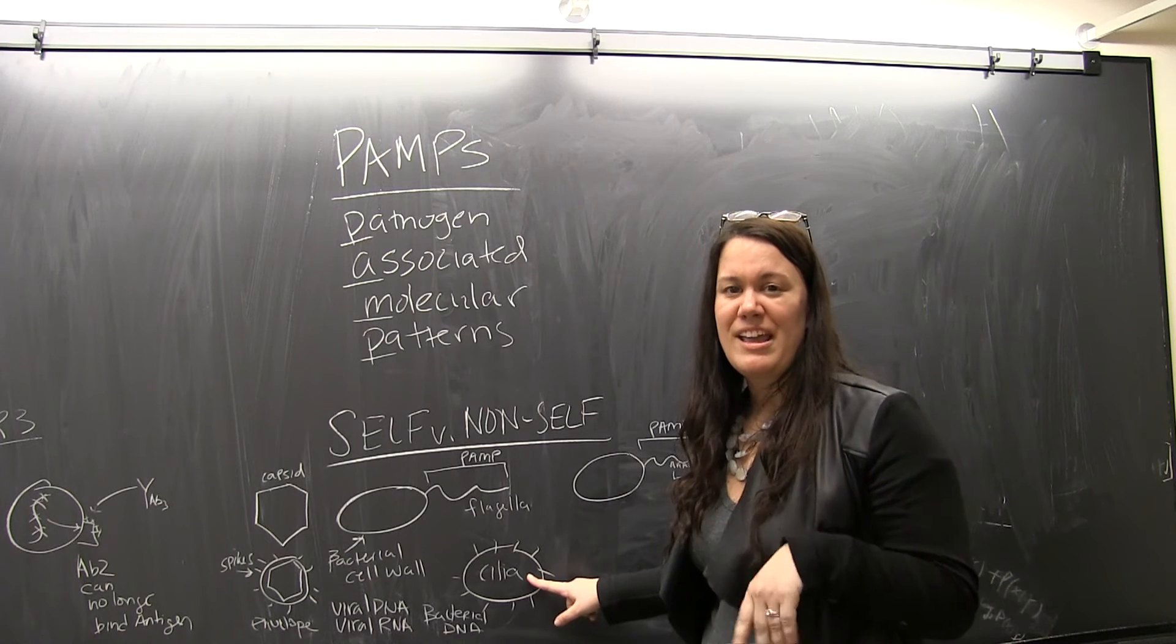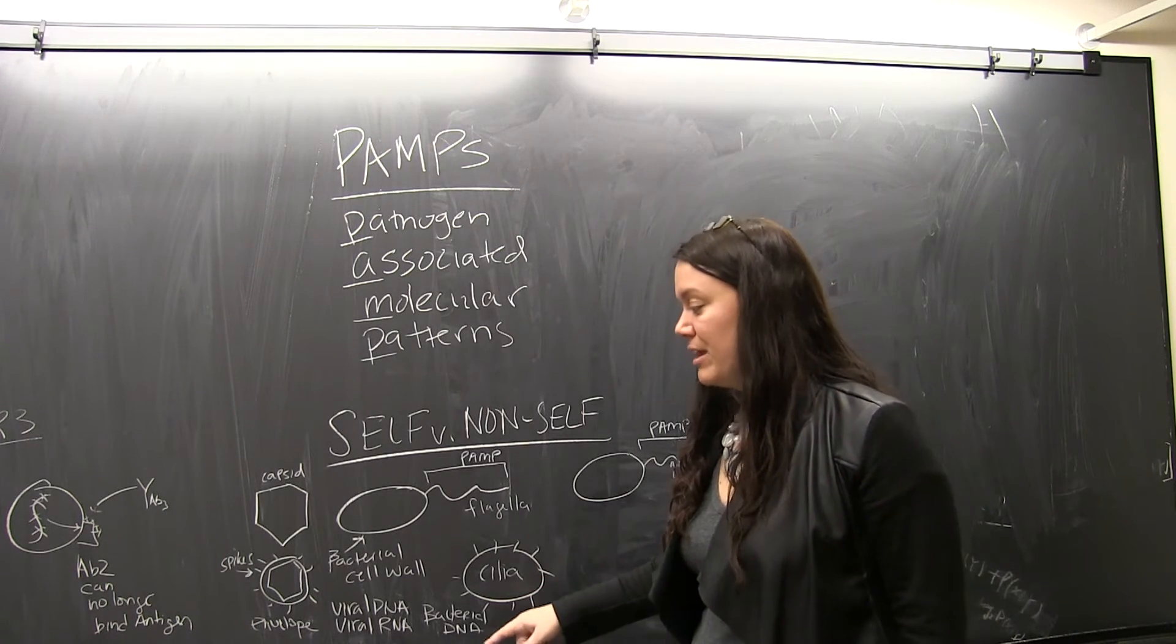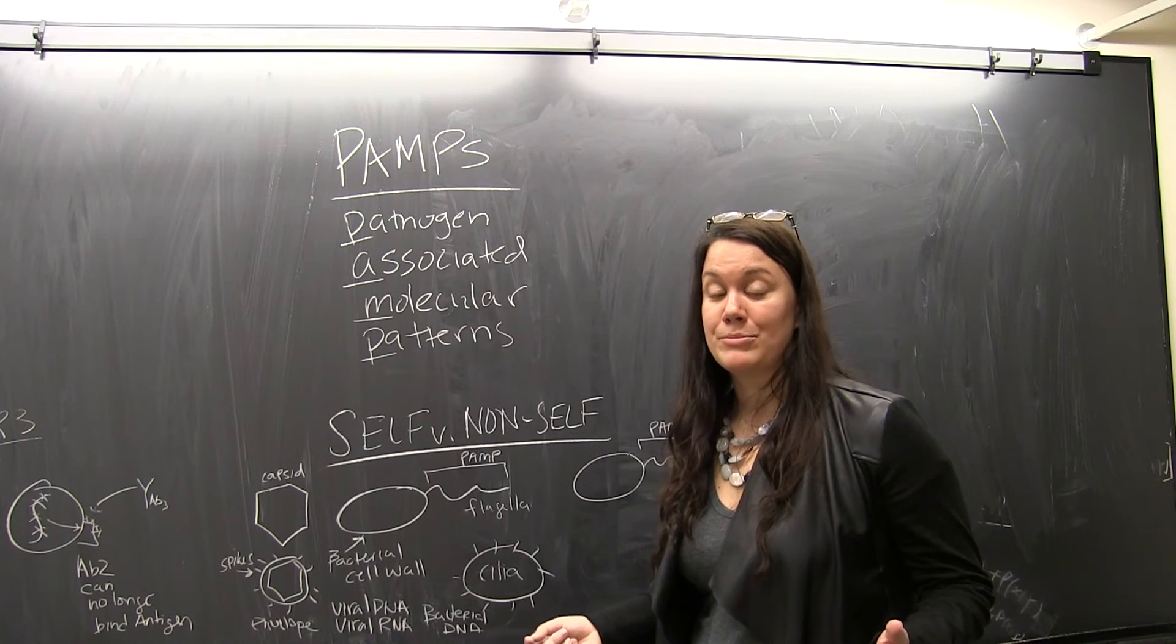Other bacteria have cilia. They're kind of very short, hair-like protein structures. These are all considered PAMPS.